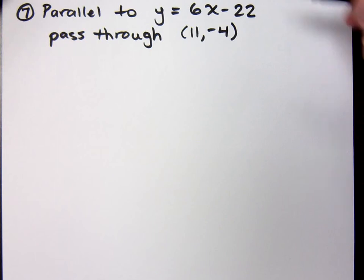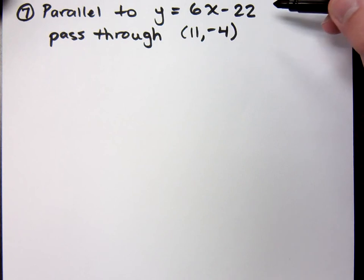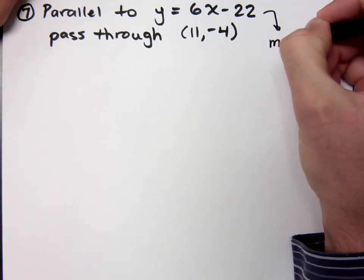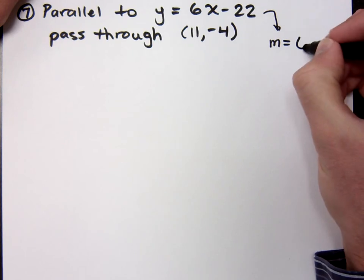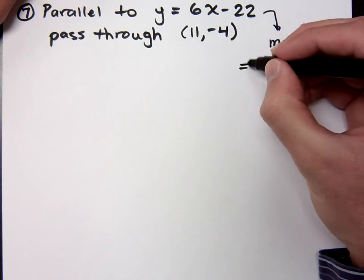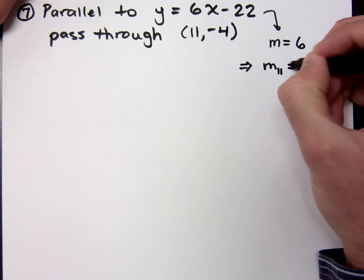So, what does it mean to be parallel to this guy? What do you know? It's going to have to have the same slope. So, we know from this guy right here that his slope is what? His slope is not 6x, but it's just 6. It's the coefficient of x, which means that when I'm talking about a slope parallel to that, what's the parallel slope?